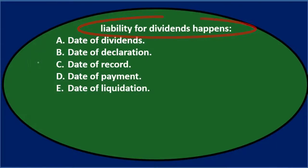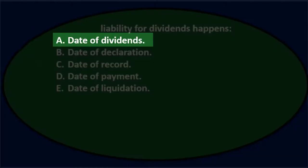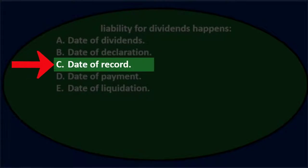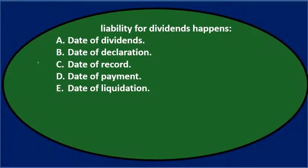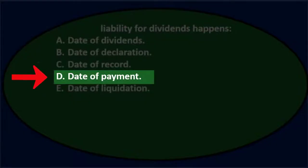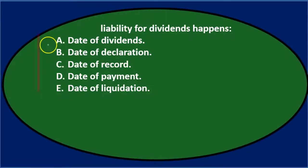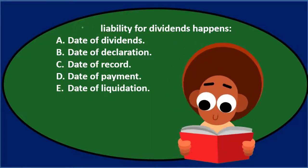Next question. Liability for dividends happens. A, date of dividends. B, date of declaration. C, date of record. D, date of payment. E, date of liquidation. Same answers here, different question. Go through it again, process of elimination.